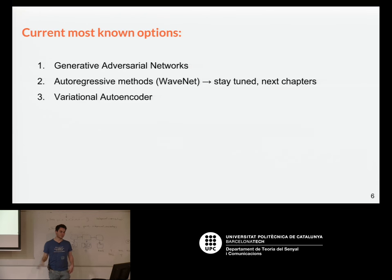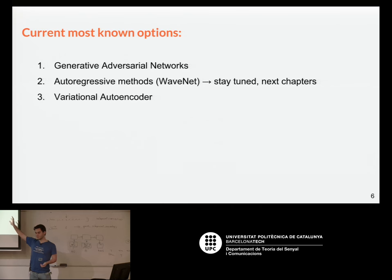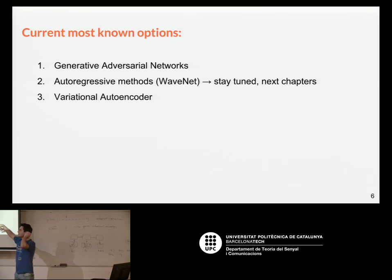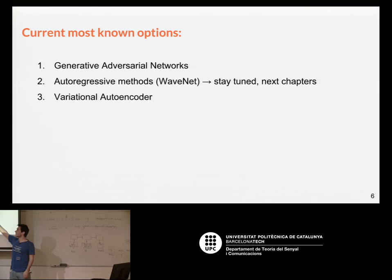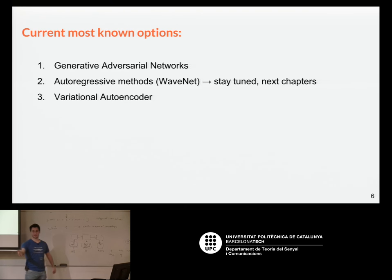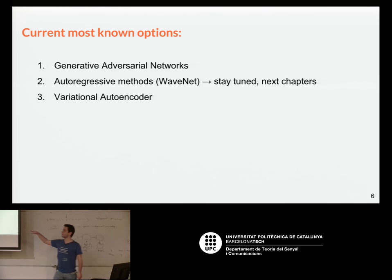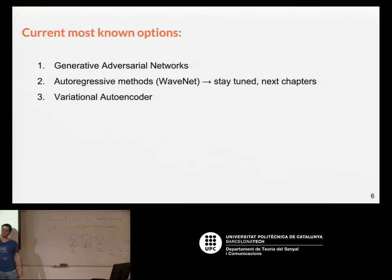The current most well-known options are generative adversarial networks — a very hot topic nowadays — and autoregressive methods like WaveNet, which is a very famous speech synthesis method that will be covered by Antonio. And finally, variational autoencoders, which Xavi introduced yesterday. Although we won't go into the details of that, we'll basically focus on the first two options.